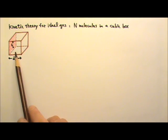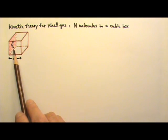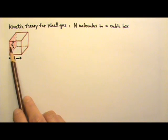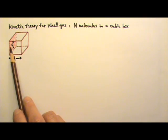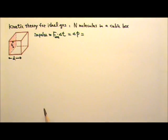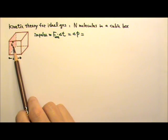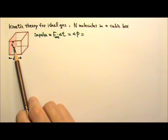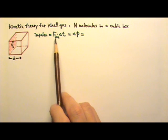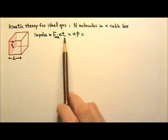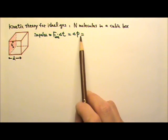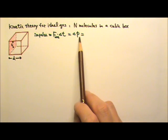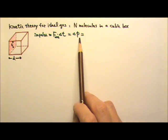Now we'll look at one molecule colliding with this face of the box. We know that the impulse on the molecule equals the average force times time, which equals the change in momentum of the molecule.